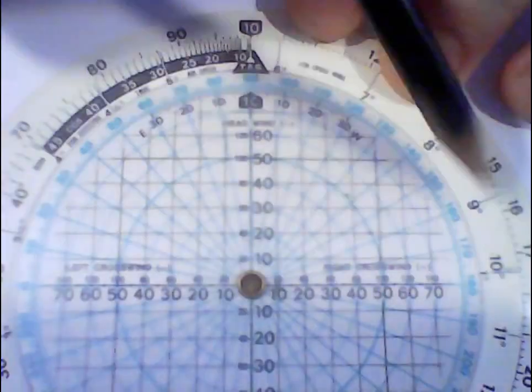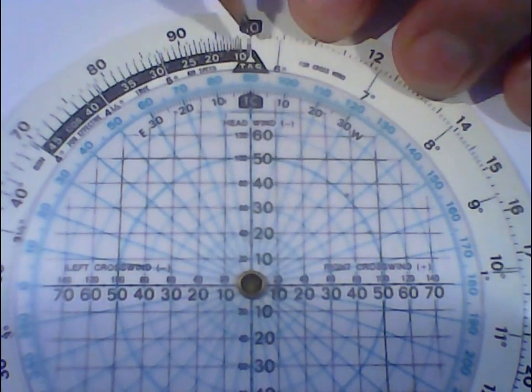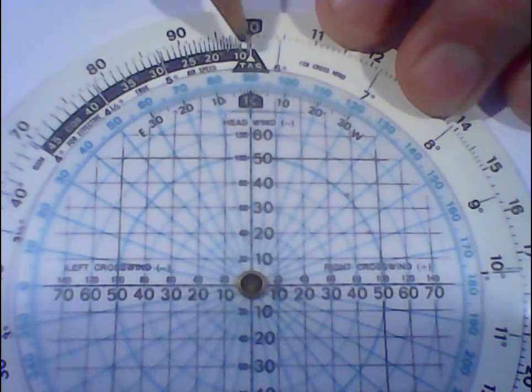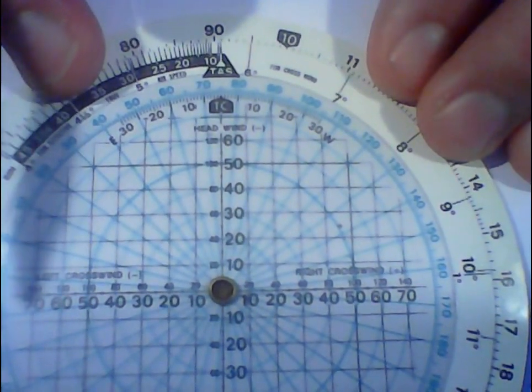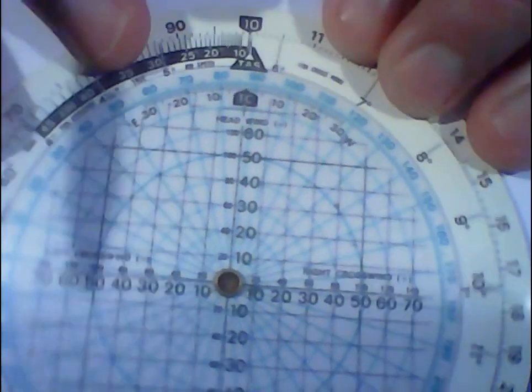So the outer scale, the first thing you do is you set, this is your true airspeed. You set it to your aircraft speed. If it was 90 knots, you'd set it there like that. But for this case, we're going to go with 100 knots.